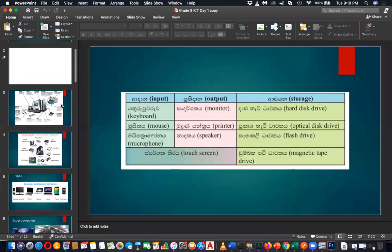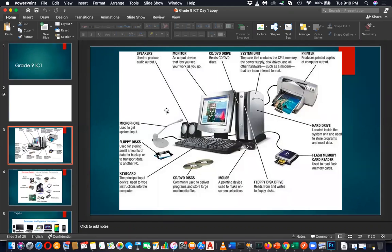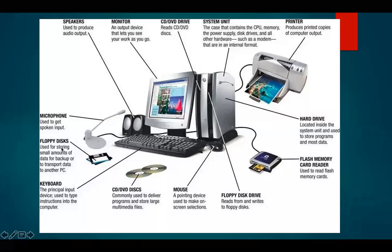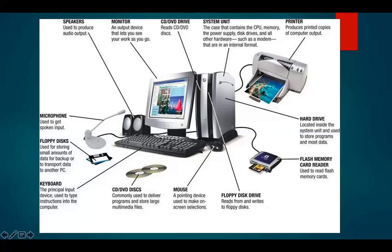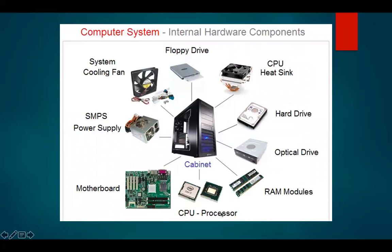Now you can easily recognize these components. You can see outside the computer: microphone, floppy disks - though now you can't see floppy disks. In our school days, I had like 20 to 40 floppies. Now we are using CDs and DVDs. There is the mouse, system unit - I said this is not the CPU, this is the system unit - CD/DVD drives, printers, and flash memory card reader. Inside the system unit, you have the CPU - central processing unit - and components like RAM, optical drive, and hard disk.